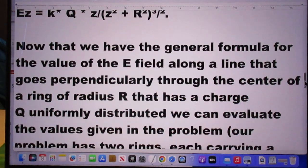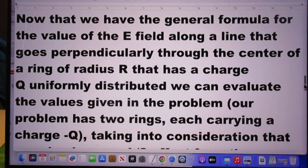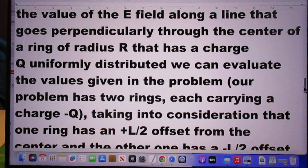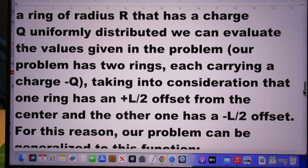So, Eugen continues, now that we have a general formula for the value of the E-field along a line that goes perpendicularly through the center of a ring of radius R that has a charge Q uniformly distributed, we can evaluate the values given in the problem.